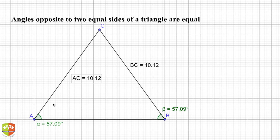I have drawn a triangle ABC, and I have measured the sides AC and BC. Both of them are equal to 10.12. I have also measured the angles alpha and beta: 57.09 degrees, 57.09 degrees.